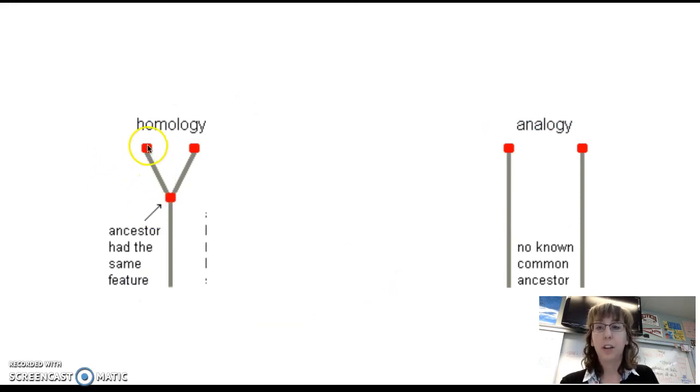Here's another comparison: if the ancestor had the same feature, it's homologous. If the common ancestor did not have that trait, it is analogous. You can think about it kind of like a little quiz. Ask yourself: did the common ancestor have the trait? If yes, it's homologous—homo meaning same, came from the same place. If no, the common ancestor did not have that trait, it is analogous.